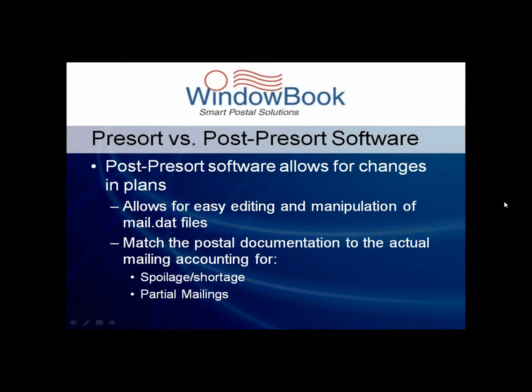Several common examples include changing the piece weights, accounting for spoilage, and creating partial mailings. Mailings are oftentimes run through the pre-sort software steps days or even weeks in advance of the actual physical preparation. At the time of pre-sorting, mailers are forced to provide estimated piece weights, but when the pieces are physically prepared, these weights must be changed to be reported accurately on your postal reports.